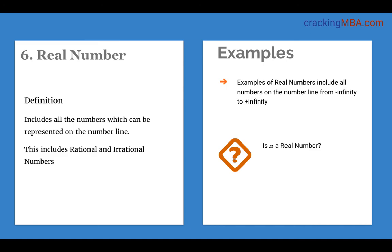Coming to the last set which is the real numbers. The real numbers include all the numbers on the number line ranging from minus infinity to plus infinity. This includes all the rational numbers, all the irrational numbers, all the integers, whole numbers and natural numbers. So, again coming back is pi a real number? Yes, pi is a real number because pi is an irrational number and an irrational number is automatically a real number.